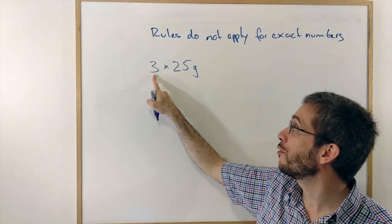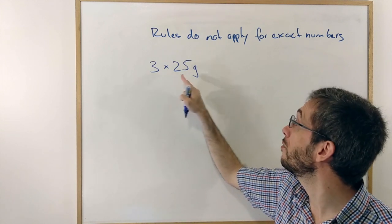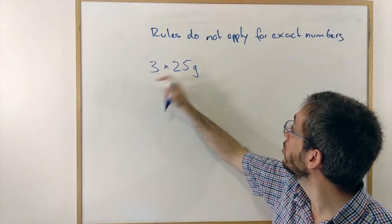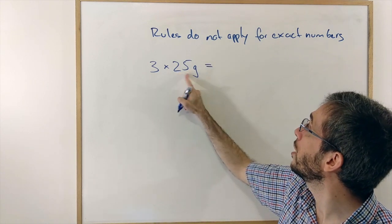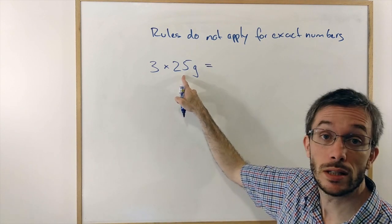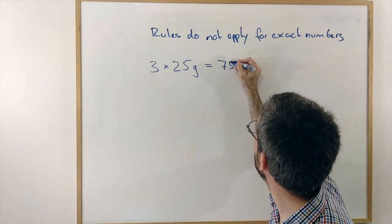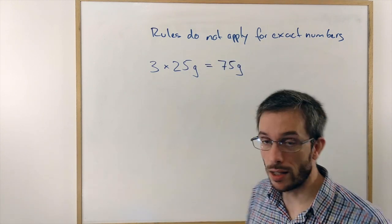However, the 3 in the case of 3 donuts times 25 grams per donut, the 3 is counted, so it doesn't count. And my lowest amount of sig figs is in here, which is 2, which gives me 75 grams as an answer.